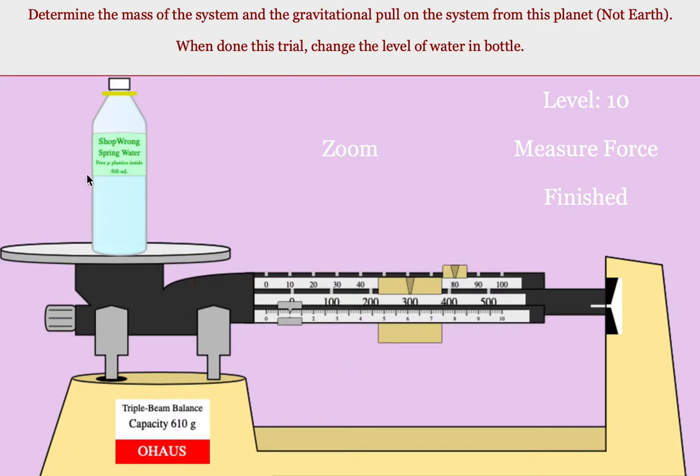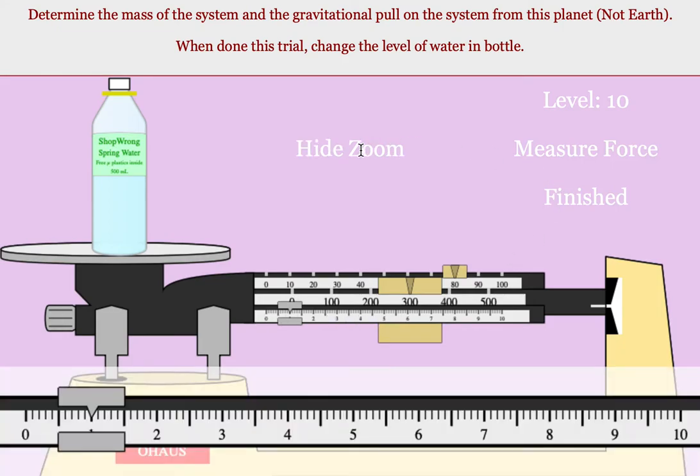When the program opens up your water bottle will be on a triple beam balance. Measure the mass and if you have trouble seeing the smallest readings on the front beam hit the zoom button. So in this example the water bottle would have a mass of 381 grams.